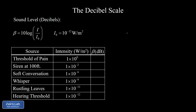We've introduced a new column on the right side of the chart for β, the sound level in decibels. For the hearing threshold, β is 10 times the log of 10 to the negative 12 divided by I₀, which is also 10 to the negative 12. That gives us the log of 1, and the log of 1 is 0, so we end up with a decibel level of 0 for the threshold of hearing.